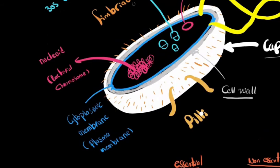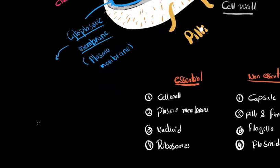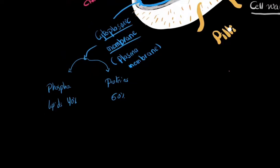Now, having covered the capsule and the cell wall, we are learning about the blue layer: the cytoplasmic membrane, also called the plasma membrane or cell membrane. It consists of 40% phospholipid and 60% proteins.